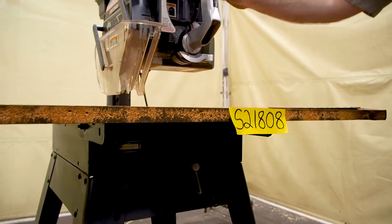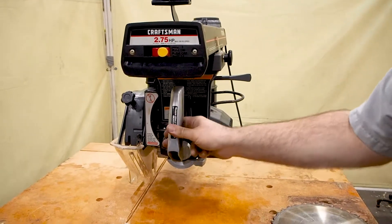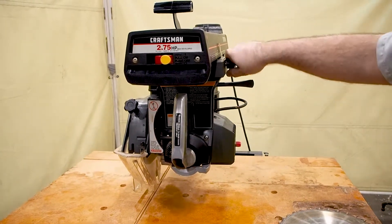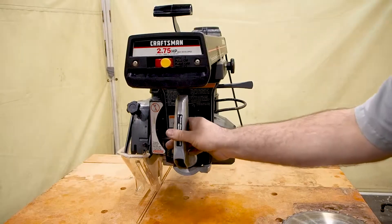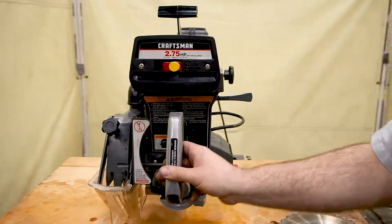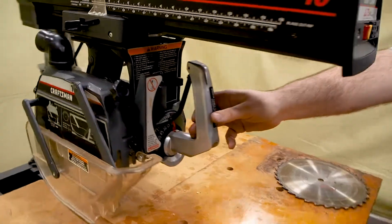There is also one more binder right here. You tighten this down, it locks the whole saw head in place. Loosen this up, it glides back and forth really nicely. This is actually a really nice unit.